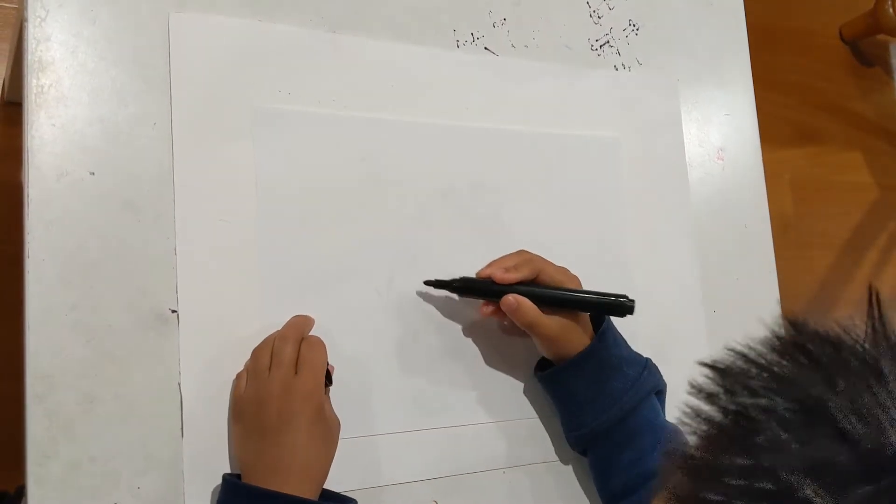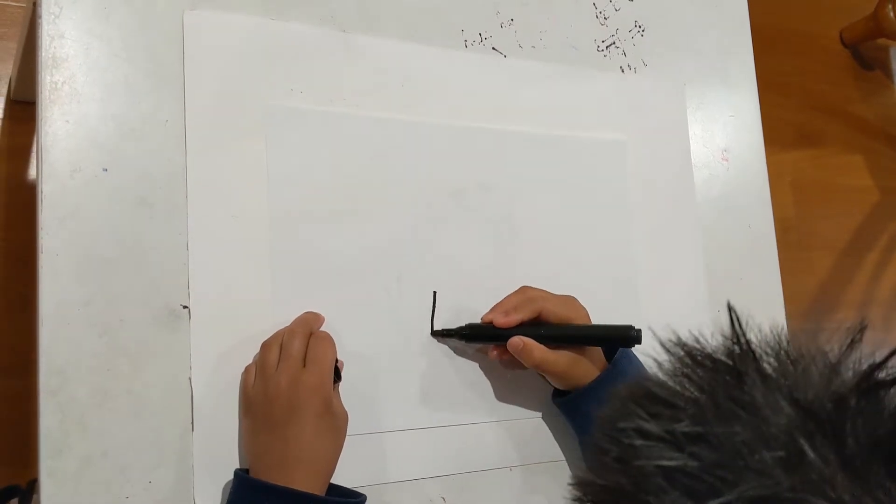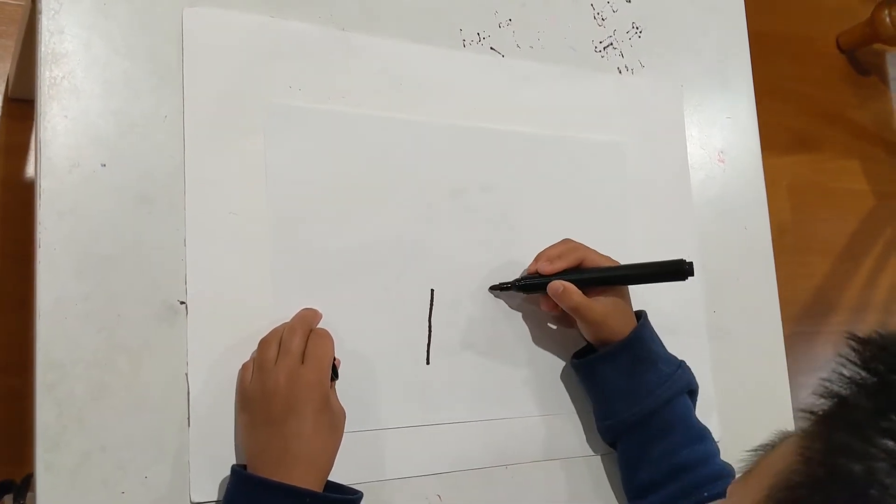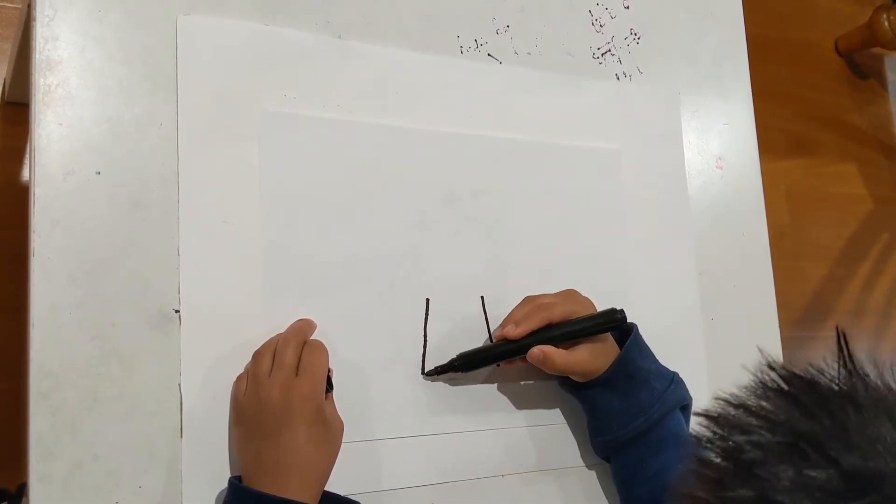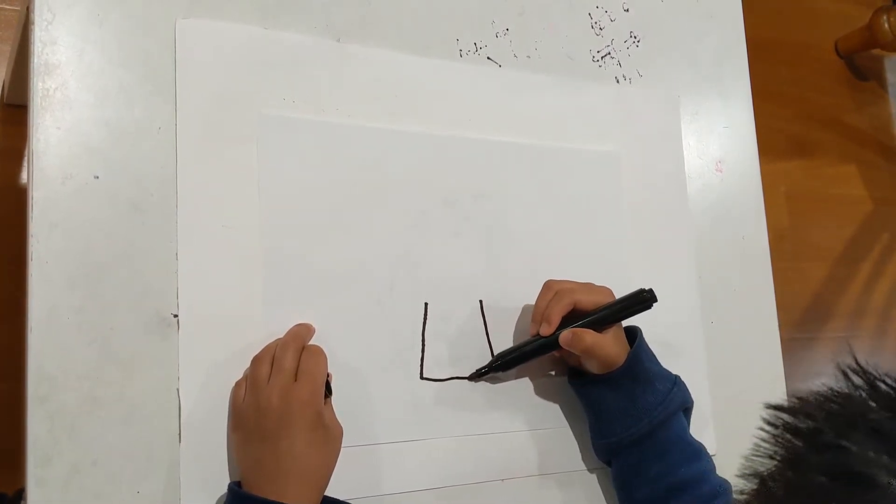First, let's draw a diagonal line up. Then another diagonal line up. Then we will connect it with a straight line.